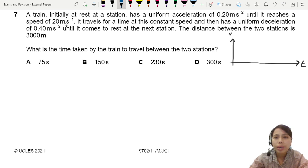So the first part, we are accelerating. I draw something like this, until we reach 20 meter per second. Then constant speed for a period. And then uniform deceleration, which is a little bit bigger than 0.2. So we slow down again until it comes to rest.